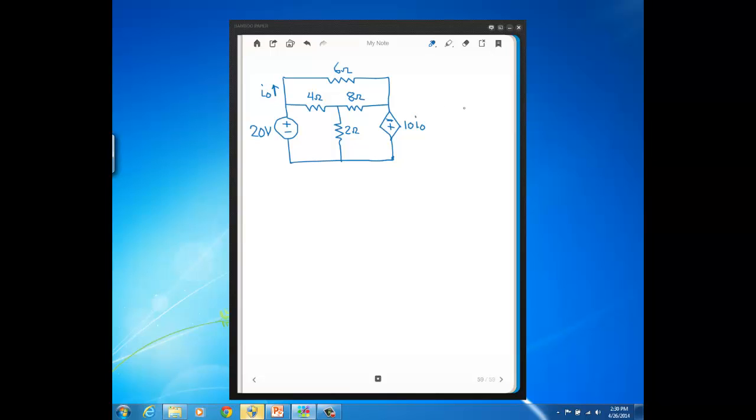Okay, but now let's go ahead and solve this with mesh current method. So the first thing, we have three meshes in this circuit. There's a mesh here, there's a mesh here, and there's a mesh here.